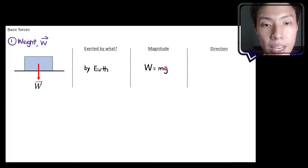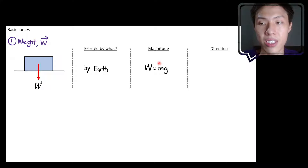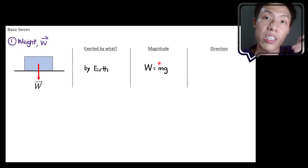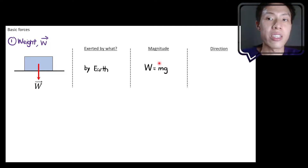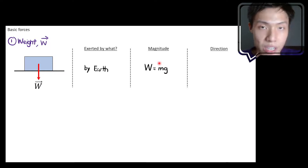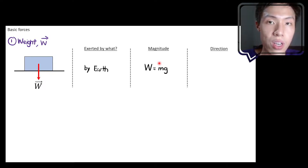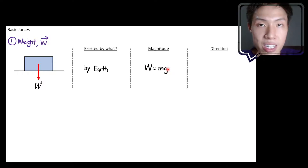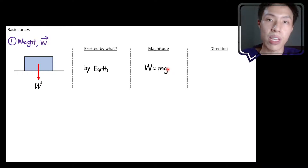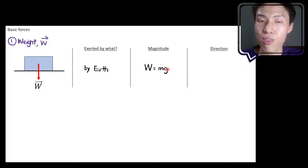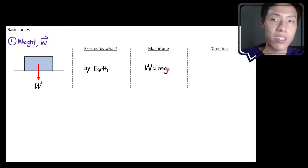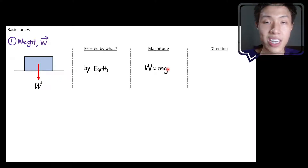If we have mass and we are near Earth, then we will experience weight. If you have zero mass, then you have zero weight — the Earth won't attract you. G means you have to be standing near the Earth to experience this gravitational acceleration of 9.81. If you are not near Earth — say, near Saturn — you would have a different value. But for our case, it's always on Earth.